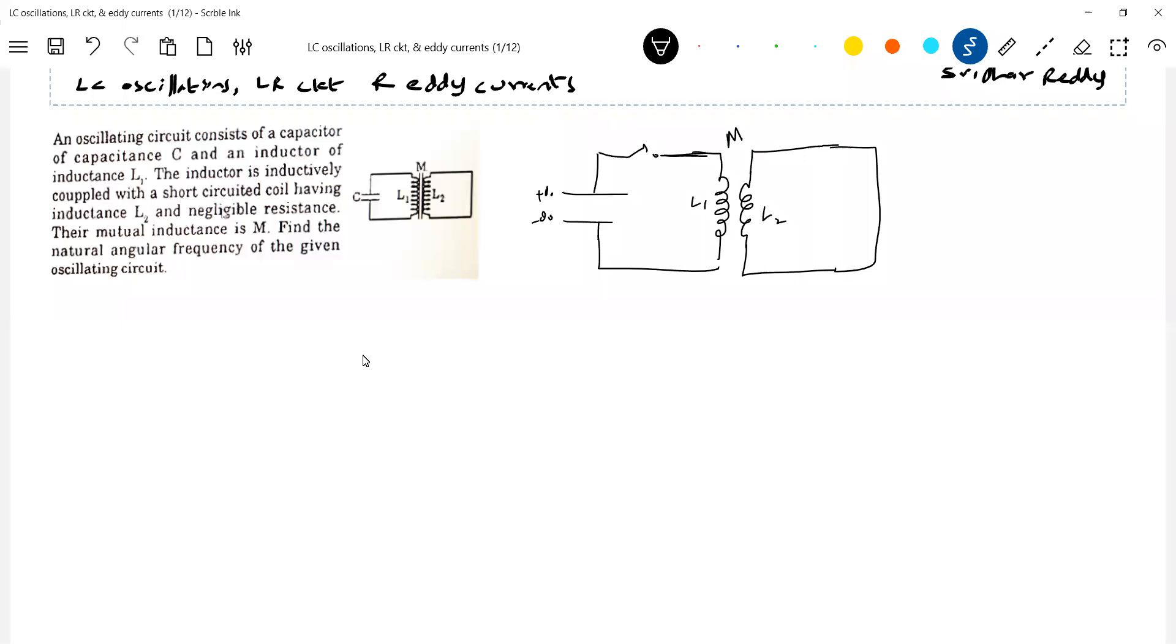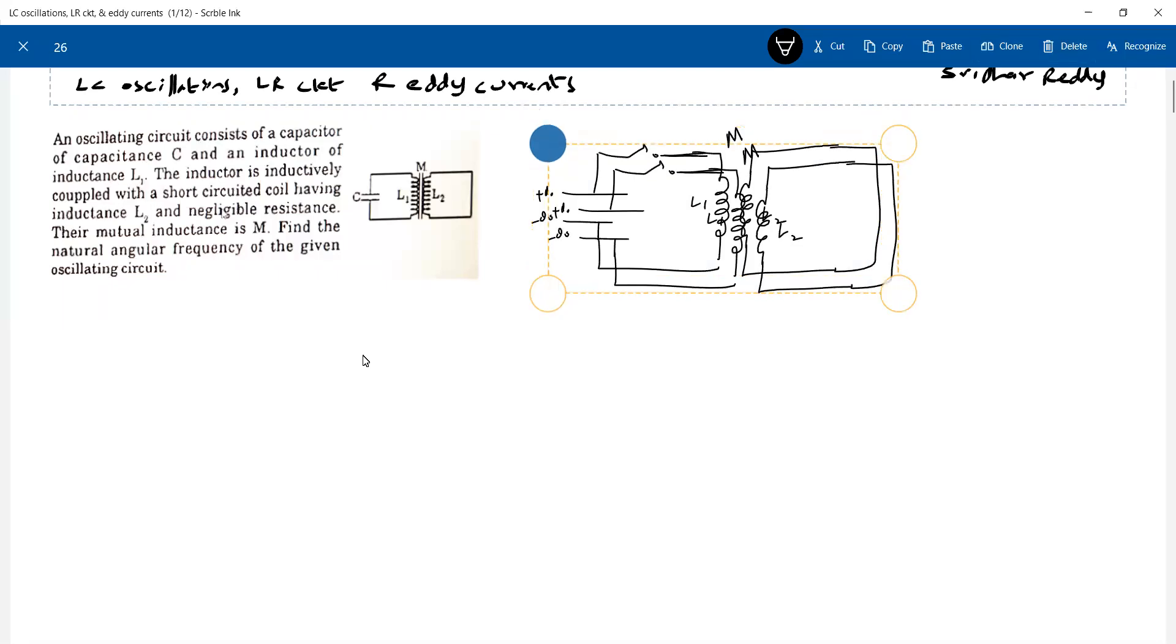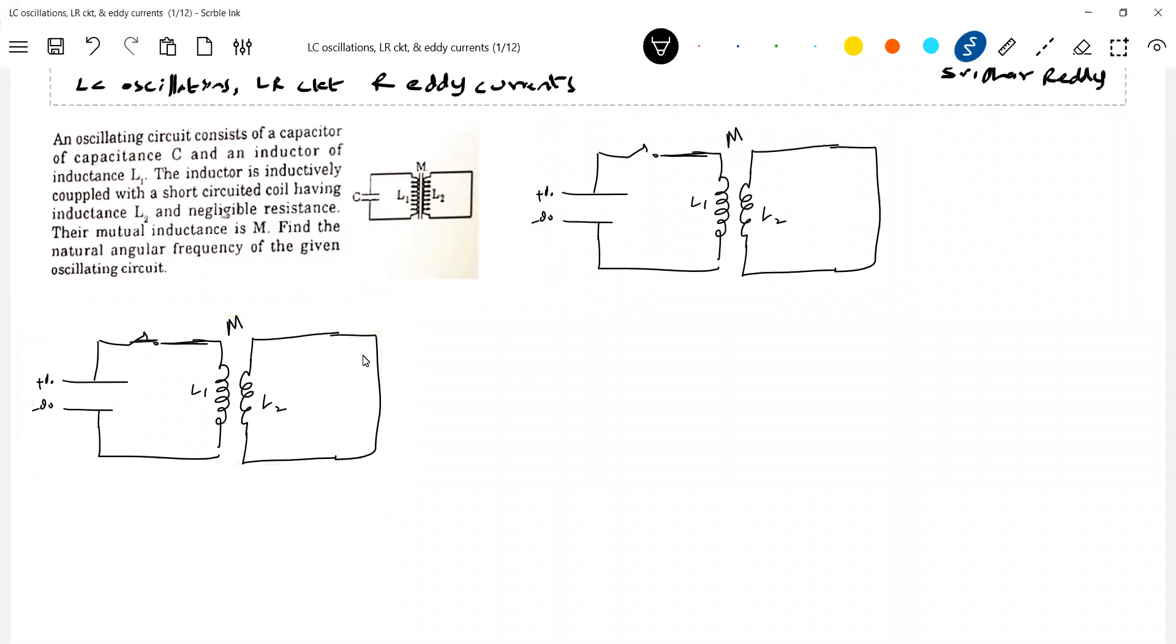Now I'll close the switch. The capacitor starts discharging. Then a current I1, let it flow in loop 1. I will take all the latch circuits here. After closing the switch, the charge in this capacitor, let it be Q minus Q. The current I1 will flow in this loop. There's a loop 1, there's a loop 2.